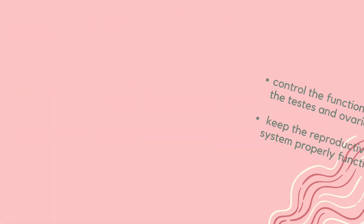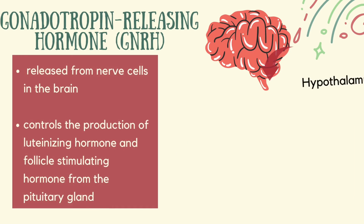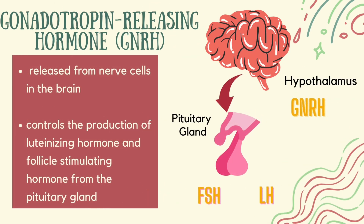These are the following hormones of the reproductive system. First, we have the gonadotropin-releasing hormone, or GnRH. They are released from nerve cells in the brain, and they control the production of luteinizing hormone and follicle-stimulating hormone from the pituitary gland.